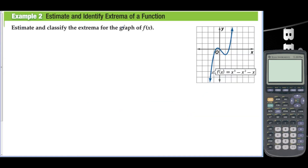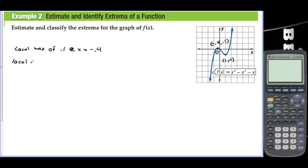Estimate and classify the extrema for the graph of f of x. Here is a maximum and here is a minimum. The point is approximately negative 0.4 comma 0.1, so we have a local maximum of 0.1 at x equals negative 0.4. Here we have a local minimum at the point 1 comma negative 1, so a local minimum of negative 1 at x equals 1.